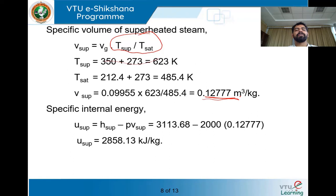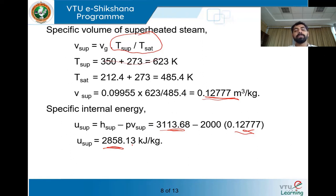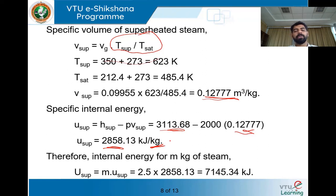Specific volume of superheated steam works out to be 0.12777 m³/kg. Internal energy of superheated steam: U = H_super − P·V_super = 3113.68 − 2000 × 0.12777 = 2858.13 kJ/kg. Since mass is 2.5 kg, total internal energy = 2858.13 × 2.5 = 7145.34 kJ. That is the internal energy possessed by the 2.5 kg of superheated steam.